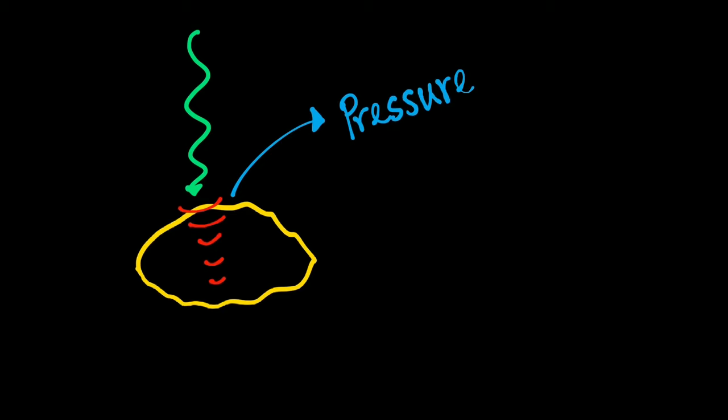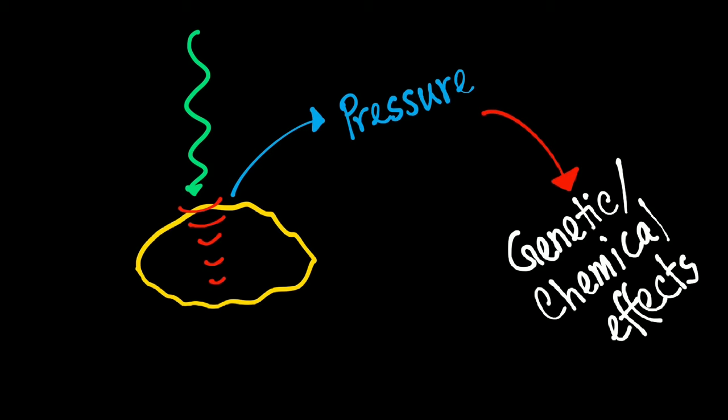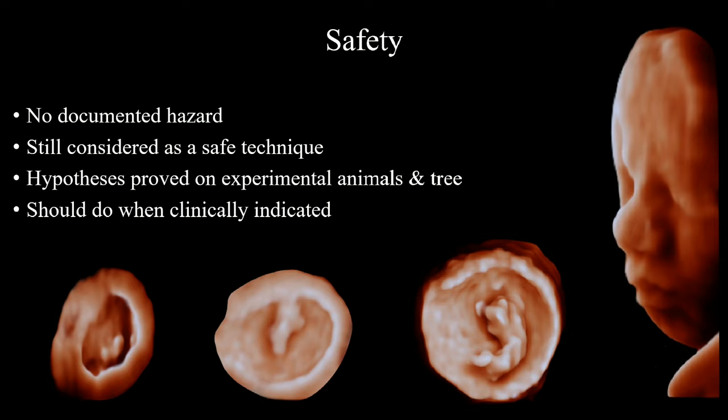Again, we are transmitting sound waves into the patient's body. This wave creates a very tiny pressure over the body tissue. This pressure can also cause some genetic or chemical effects inside the body. Unfortunately, these hypotheses are proved on experimental animals. On experimental animals, ultrasound has been proven to cause different types of congenital anomalies, even postpartum death. Adverse effects of ultrasound could not be proven on human bodies. So, we believe ultrasound is a safe procedure for humans, but we should do it only when clinically indicated.